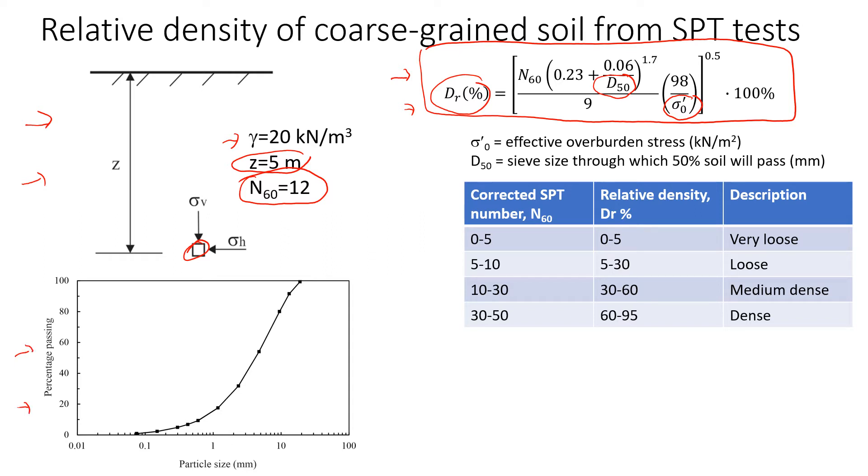We're going to look at percentage passing and we're going to find 50% here, and we see where it crosses the curve. So according to my rough estimations, it's about 3 millimeters. So this is D50.